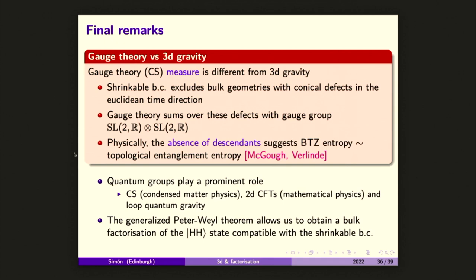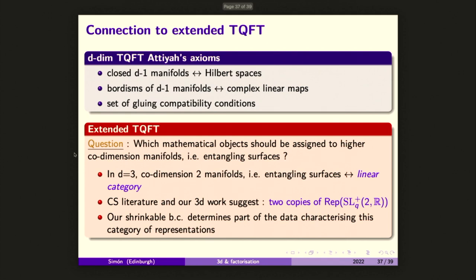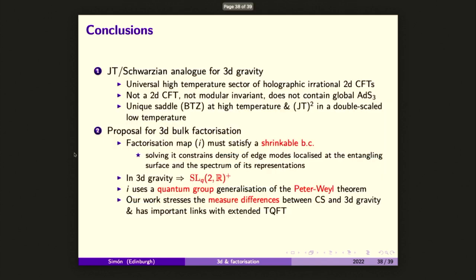This density of states still depends on the Liouville parameter b, which depends on the central charge. This actually agrees with a quantum deformation of the Plancherel measure of the quantum group SL(2,R)+, with a deformation appearing in Teschner's work on Liouville theory extending the space of integrable functions on this quantum group. This solves the factorization problem. The appearance of quantum groups in this context has a huge literature — I'm not claiming this is new, but it's relevant for the factorization problem. Our results also seem to match the axioms of extended topological quantum field theory. Thank you.